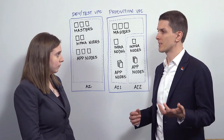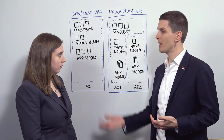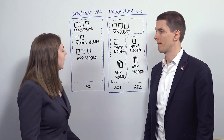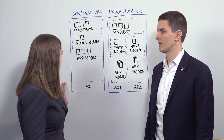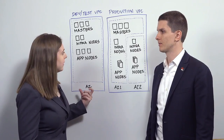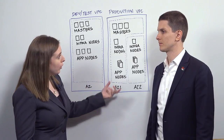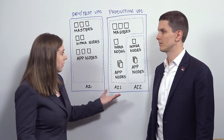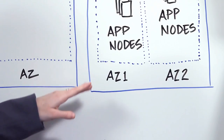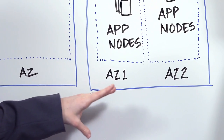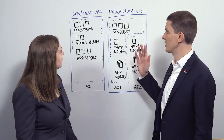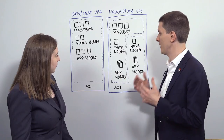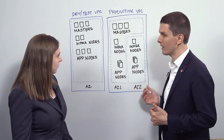Beyond the normal reasons of wanting to separate dev test from production, when you separate your dev test cluster and your production cluster into different VPCs, that allows you to configure your production cluster differently based on the different needs required by a production instance. For example, you could use availability zones in your production VPC. We still have the same generic OpenShift installation, but our Amazon deployment is slightly different to use the availability zones.